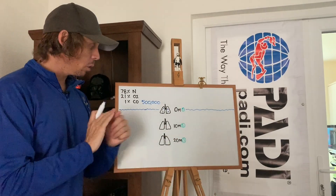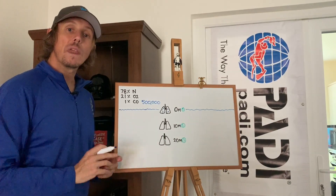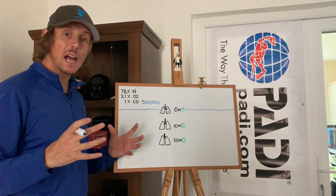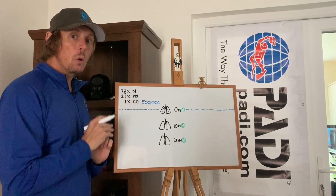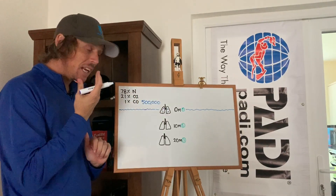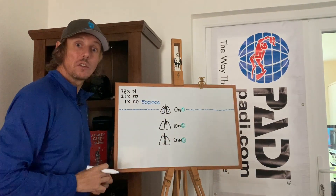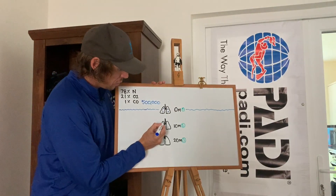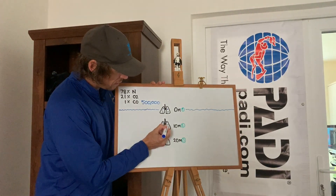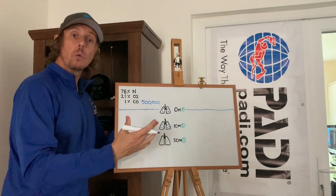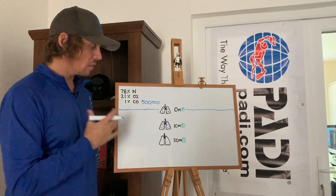But if we now go to 10 meters, where the pressure is twice that at the surface, it takes two times as much gas to fill those lungs at 10 meters than at the surface. So with every breath you take in, you are now taking 500,000 molecules times two. We would actually have a million molecules of carbon monoxide entering your respiratory system at 10 meters.